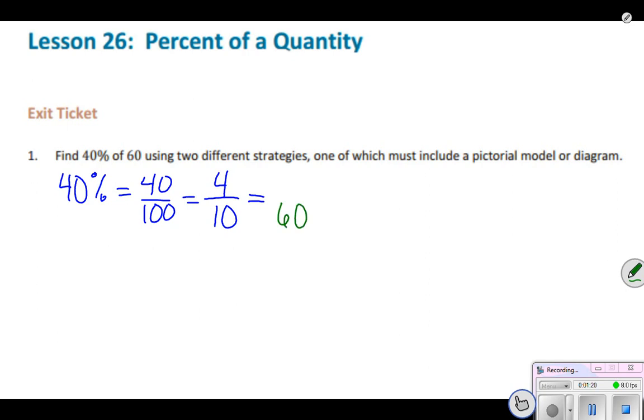So I'm trying to figure out what 40% of 60 is. I can see that 10 times 6 is 60, so 4 sets of 6 is equal to 24.